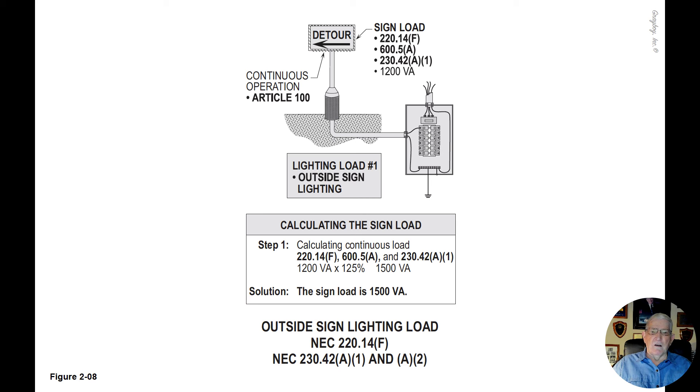220.14F, 600.5A and 230.42A1 are the sections that would be applied here. We would take the 1200 VA which is listed and take 125% which would equal 1500 VA.